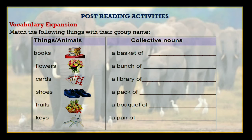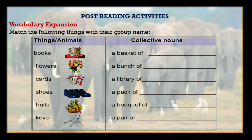The collective nouns given are: a basket of dash, a bunch of dash, a library of dash, a pack of dash, a bouquet of dash, a pair of dash. Students, you have to match these things with their group name. Take your time — you can do it, these are quite easy. Hope you have done. Let's match your answers.